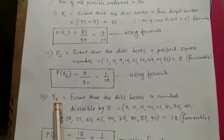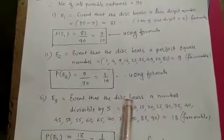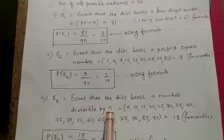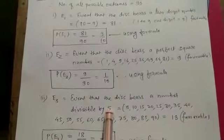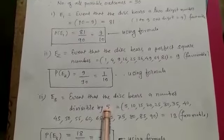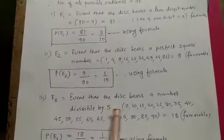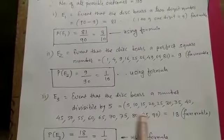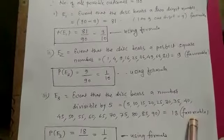Third one, E3 equals event that the disc bears a number divisible by 5. As you know there are many numbers from 1 to 90 that are divisible by 5. I have mentioned here 5 to 90, total 18 favorable numbers.